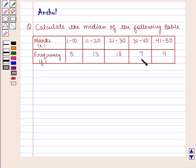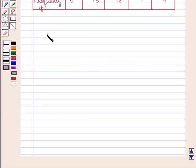Here the distribution is given such that the marks are in the range of 1 to 10, 11 to 20, 21 to 30, 31 to 40, 41 to 50 with the corresponding frequencies given by 5, 13, 18, 7 and 4.